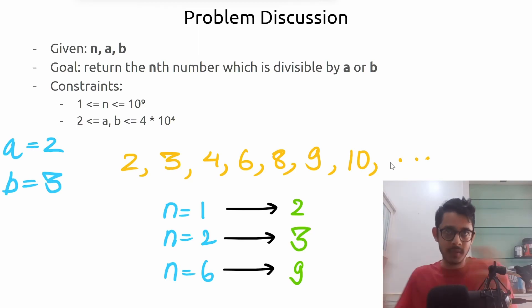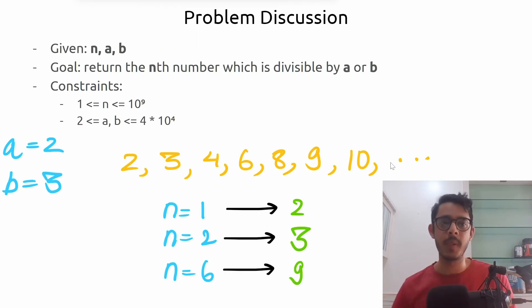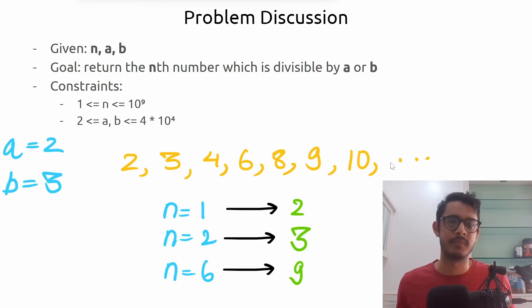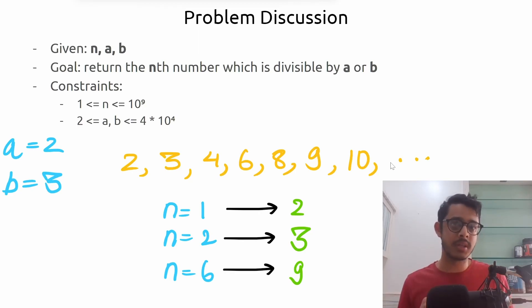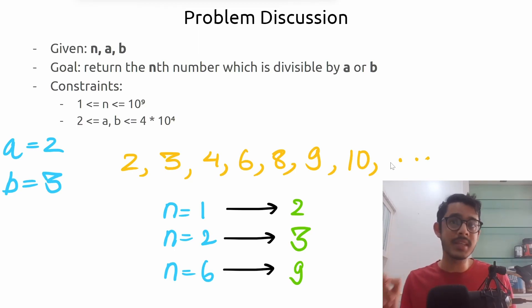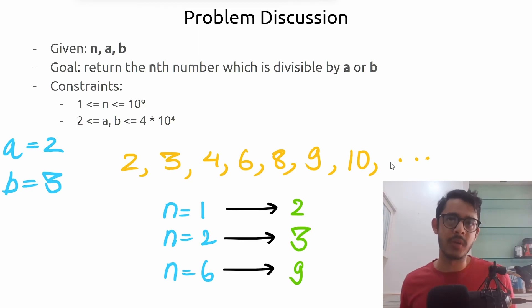Given a and b — and note that the sequence is not given to us, only a and b are — and given n equals 1, can you find the first number in the sequence? It's pretty simple: the first number is 2. For n equals 2, the second number is 3. For n equals 6, you count 1, 2, 3, 4, 5, 6 and find the sixth element in the sequence is 9.